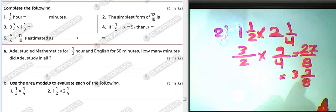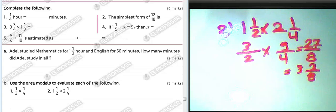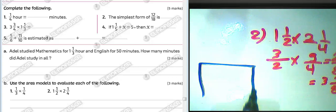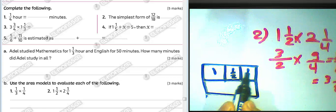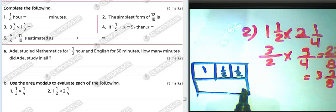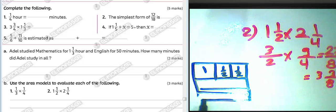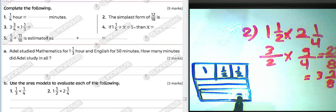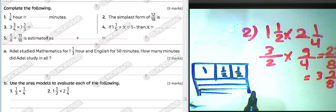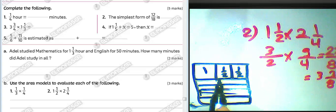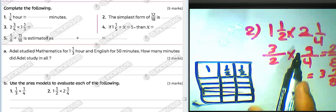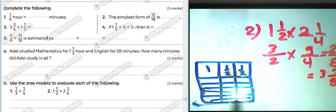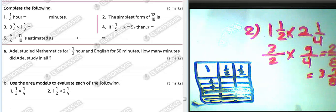Now use the area model for one and a half times two and one over four. Draw one and a half vertically and two and one quarter horizontally — divide into sections showing two whole parts plus one over four. Color the corresponding parts to show the multiplication visually using the area model.